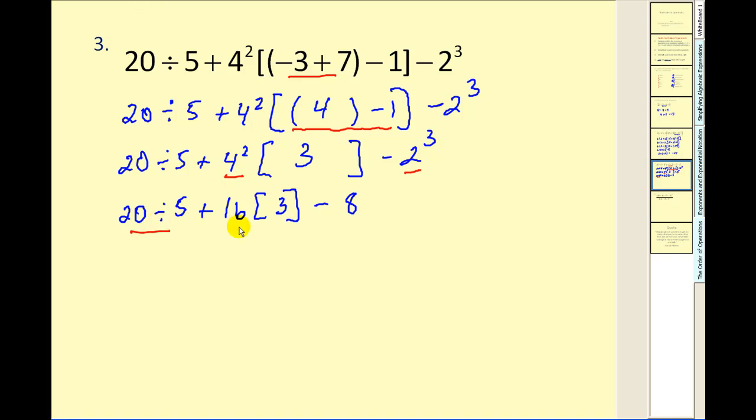Our next step is to perform multiplication and division as it occurs from left to right. Here we have division and here multiplication. Twenty divided by five gives us four. Sixteen times three gives us forty-eight. And the last step, add and subtract as it occurs from left to right. Four plus forty-eight is fifty-two. Minus eight gives us forty-four.